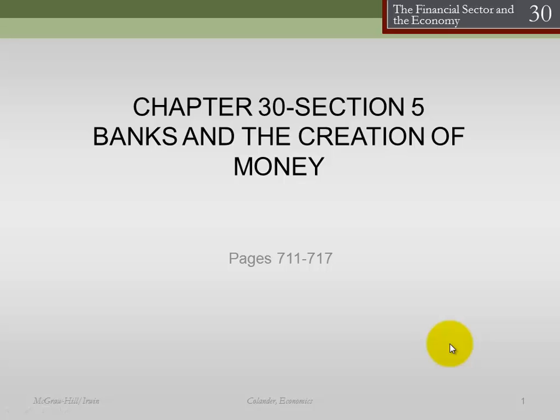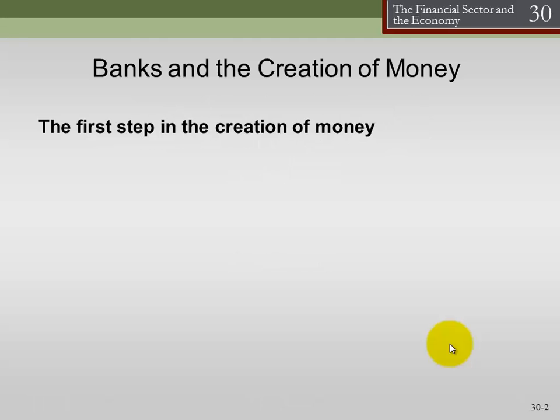Let's continue Chapter 30 with Section 5 and talk about how the financial system can create money. The financial system itself creates money, so we should really talk about money in terms of two different parts. We talk about outside money, sometimes referred to as monetary base, which is the money the Federal Reserve creates and supplies to the financial system. The financial system then takes that money and uses it to create inside money — liquidity created from within the financial system.